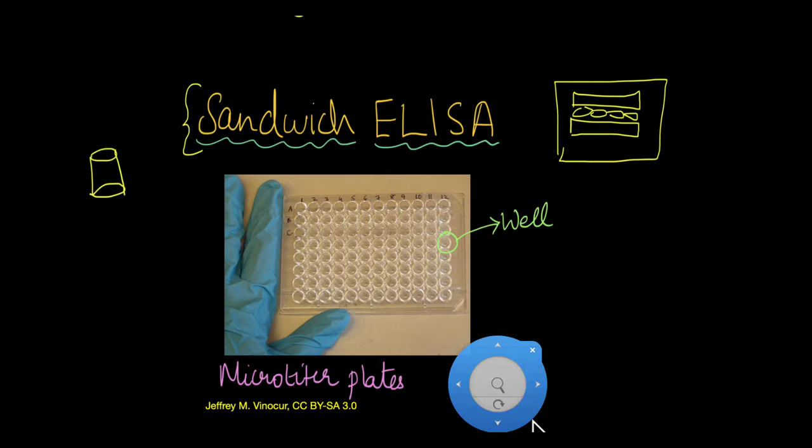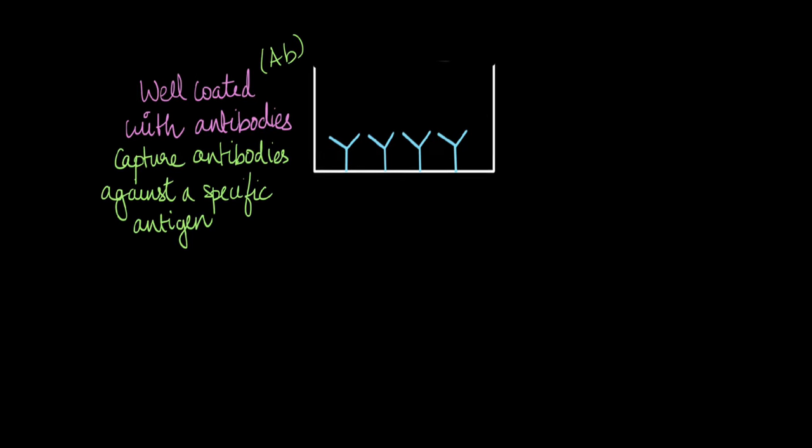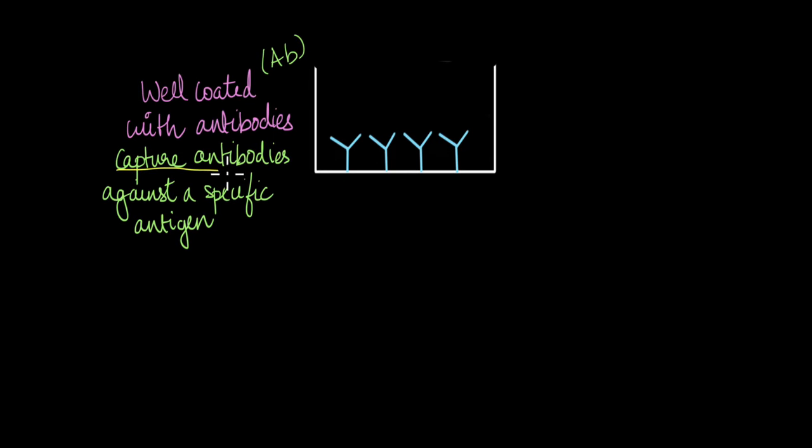So the process of sandwich ELISA begins with the well coated with capture antibodies. Capture antibodies, these blue Y-shaped thingies here, they are antibodies against a specific antigen. Usually the antigen that we're expecting to find in the sample, the bacterial protein or the viral protein that we're expecting to find in the sample, the well is coated with capture antibodies against that specific antigen. And the well is treated to make sure that only these antibodies are bound to the well and nothing else has bound to the well.